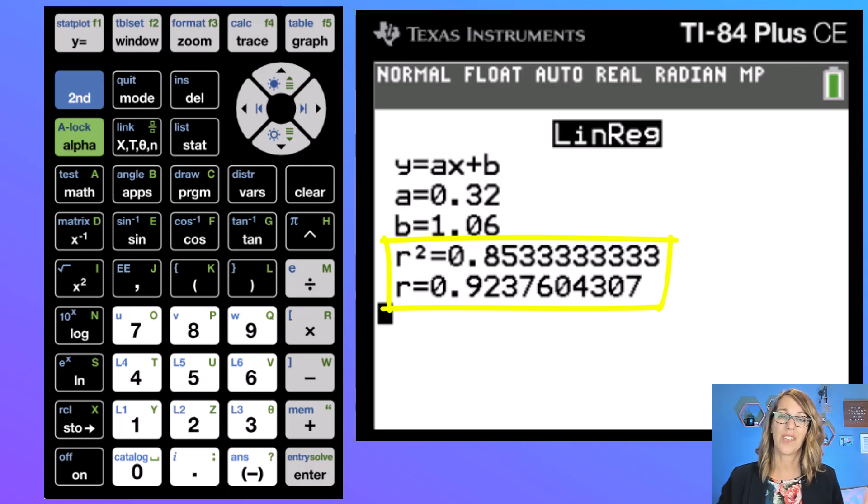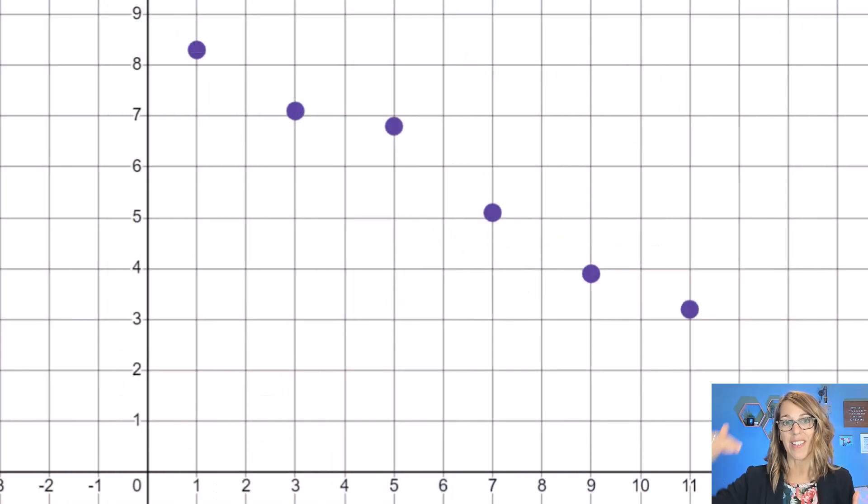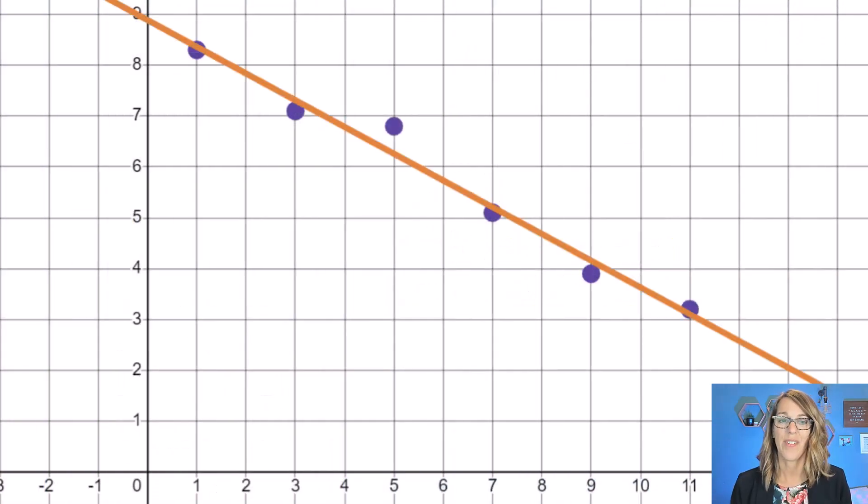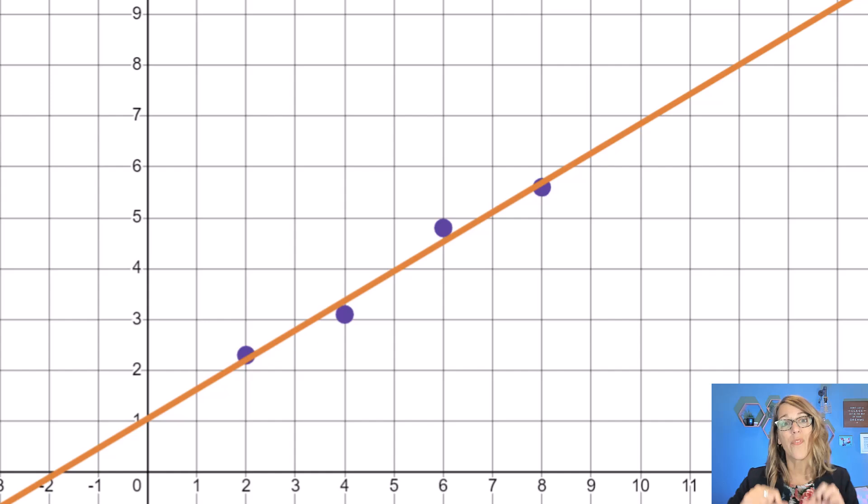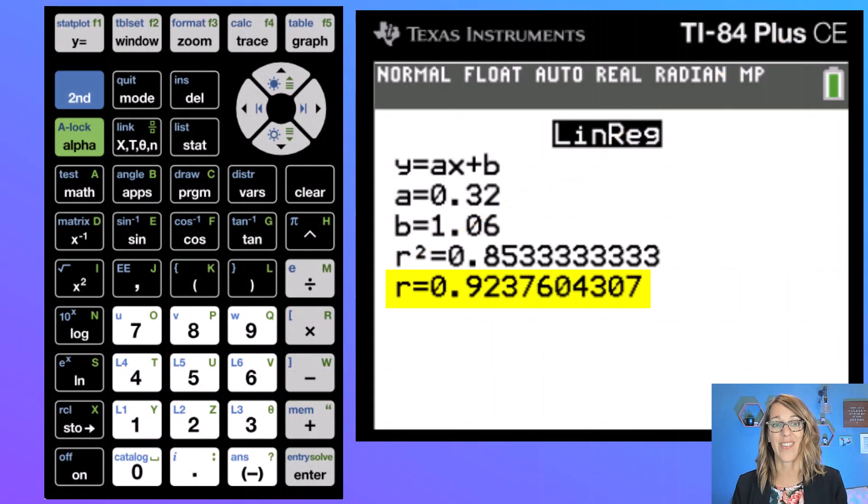Now that r ranges from negative one to positive one. If you're on the negative one side you've got a negative correlation so that means that your line goes down. If you're at a positive one, which we're really close to, that means that your line is going to go up. Both of your variables increase together. We're actually really close to one here so we do have a strong positive correlation,